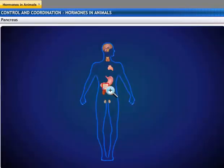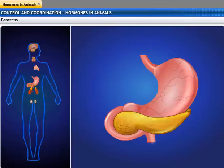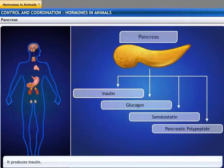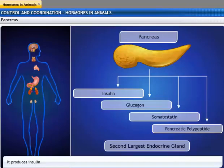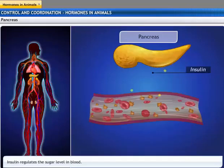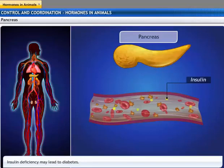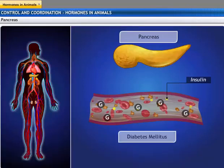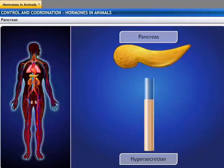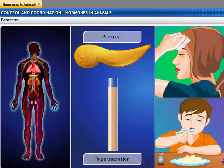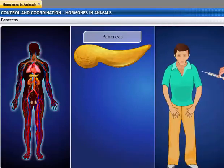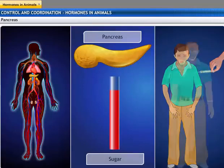The pancreas is located just below the stomach, within the curve of the duodenum, and secretes hormones such as insulin, glucagon, somatostatin, and pancreatic polypeptide. It is the second largest endocrine gland. If the insulin hormone is secreted in small amounts, the sugar level in our blood rises and causes a disease called diabetes mellitus. Hypersecretion of insulin causes hypoglycemia, sweating, and hunger. Diabetic patients may be given injections of insulin to control the sugar level in the blood.